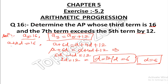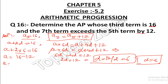Now we substitute d = 6 into the equation a + 2d = 16. So a + 2×6 = 16, which gives a + 12 = 16. Therefore a = 16 − 12 = 4.